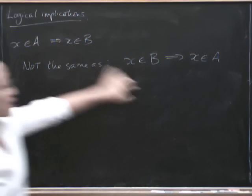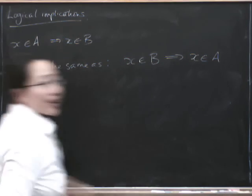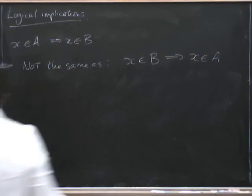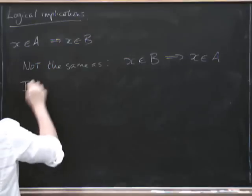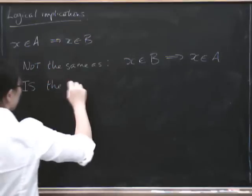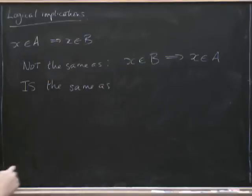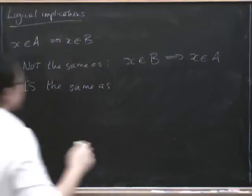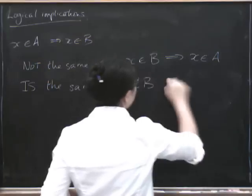This one said A is a subset of B, that one says B is a subset of A. What I've done here is I've gone backwards. That is not the same thing. However, it is the same as X is not in B implies X is not in A.